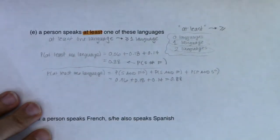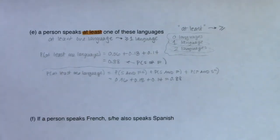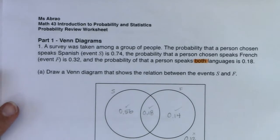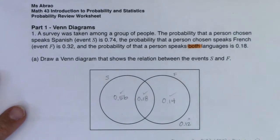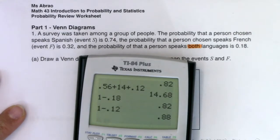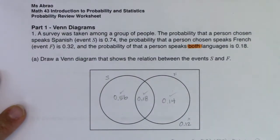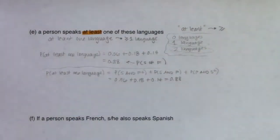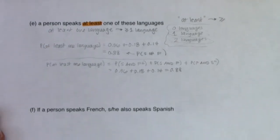I could have also used the complement rule — we talked about that in Part D. The only people I didn't want to include were those speaking zero languages — those 12%. Well, if we do 1 minus 0.12, there's 88% again. So we can use the complement rule here if you would like. All right, so with that, let's move over to Part F.